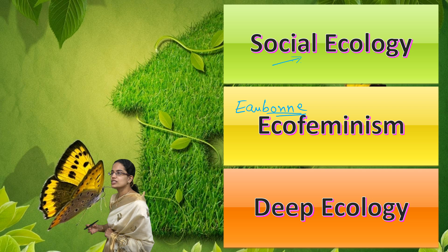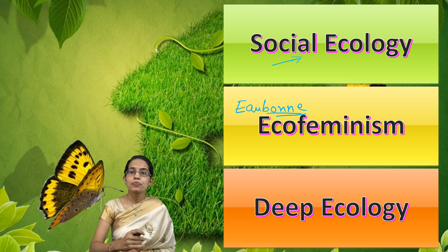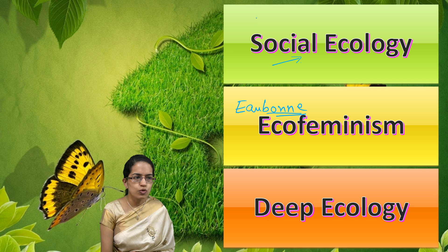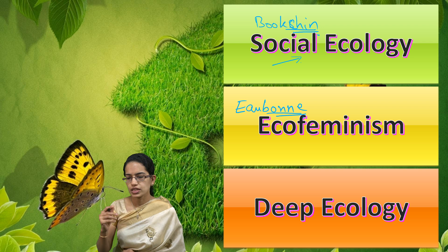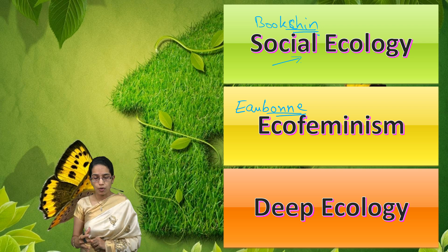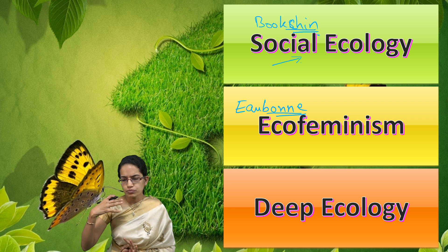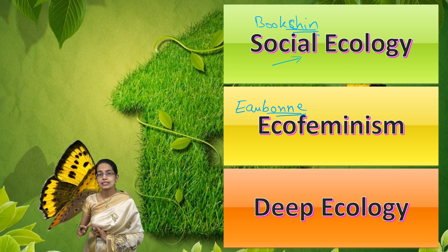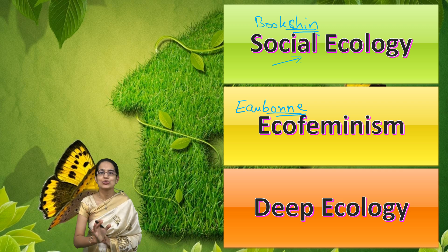Social ecology locates the foundation of environmental crisis in the dominant ideologies that exist in society. Bookchin was one of the major propounders of this theory. Social ecology explains that social problems are a connection of mutually dependent thoughts that nature and human beings share, reflecting a mutual dependence between nature and humanity.